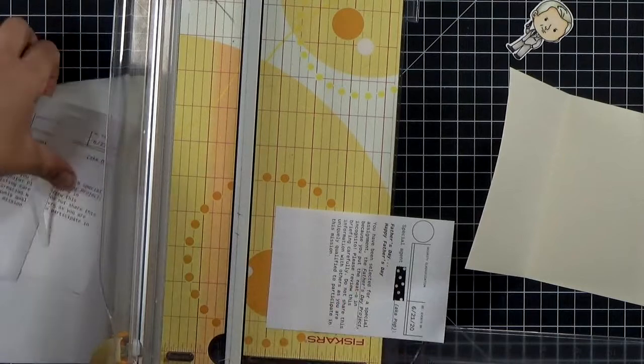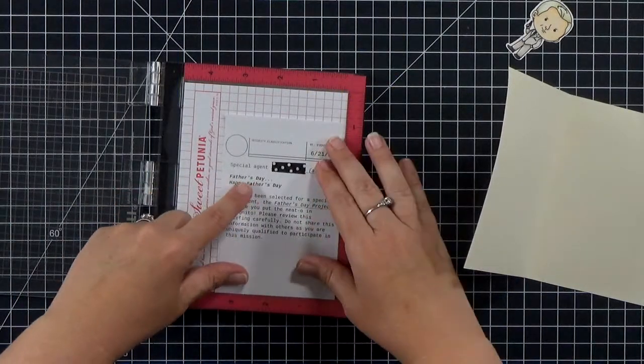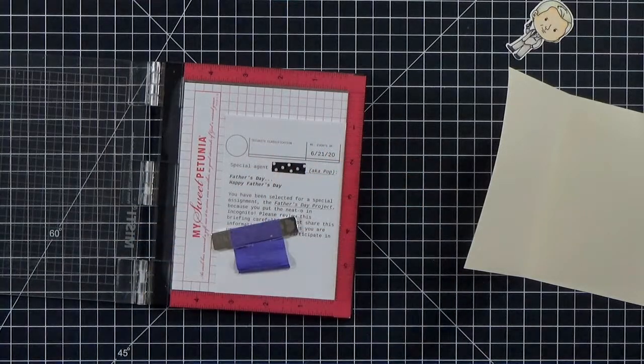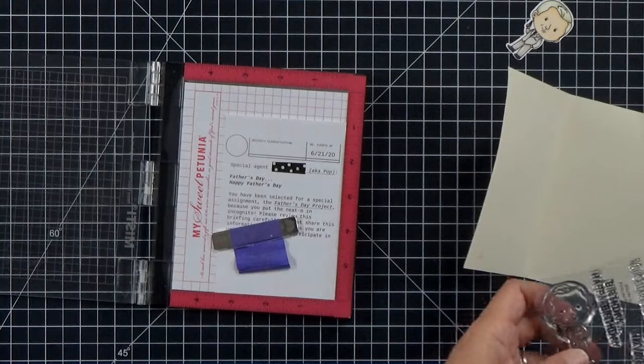And then I want to go ahead and stamp that martini in the circle up at the top. And then we'll also put Top Secret up there. But they're going to be in two different colors. So I'll stamp one at a time. First the martini. And I'll just go ahead and line him up.